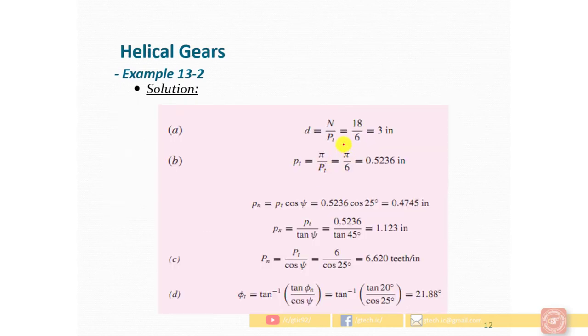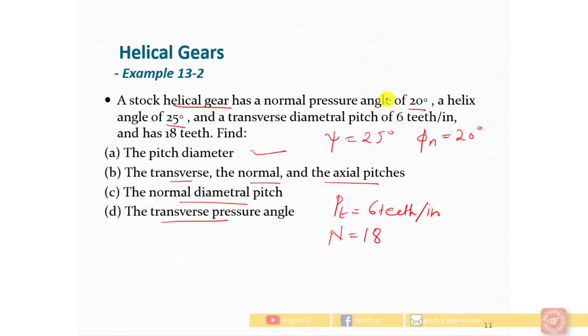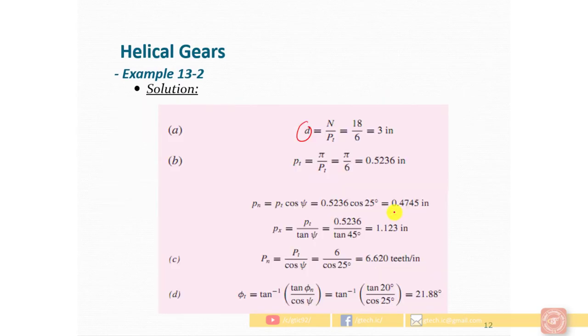First, let's calculate the pitch diameter D. The pitch diameter equals the number of teeth divided by the transverse pitch. The number of teeth is 18, the transverse pitch is 6, so 18 by 6 gives the pitch circle diameter.